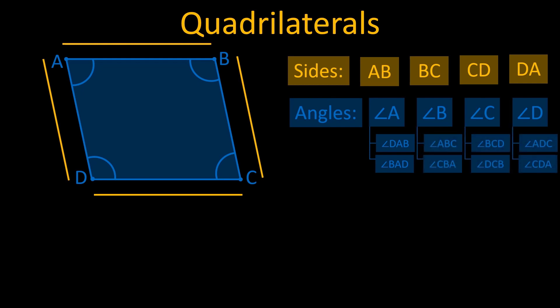Angles A and angle C are opposite angles, while angle A and angle B are adjacent angles.